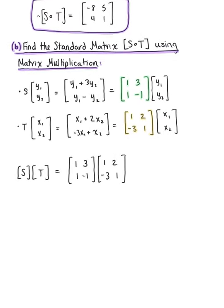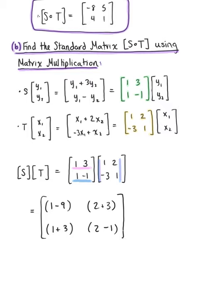Applying the row-column rule: first row times first column gives 1 − 9 = −8; first row times second column gives 2 + 3 = 5; second row times first column gives 1 + 3 = 4; second row times second column gives 2 − 1 = 1. This gives the 2×2 matrix [−8, 5; 4, 1], which matches what we found in Part A!